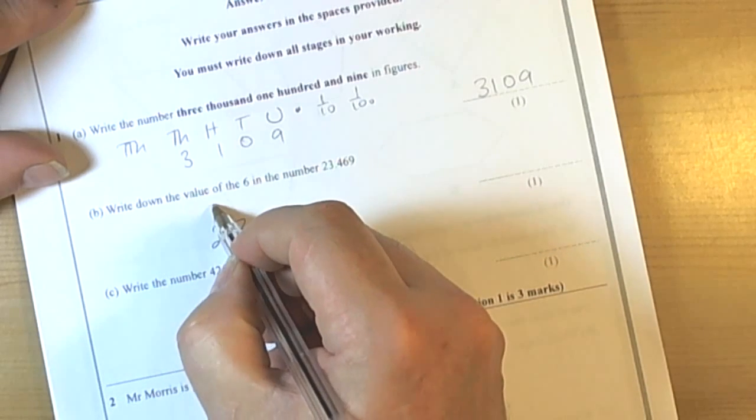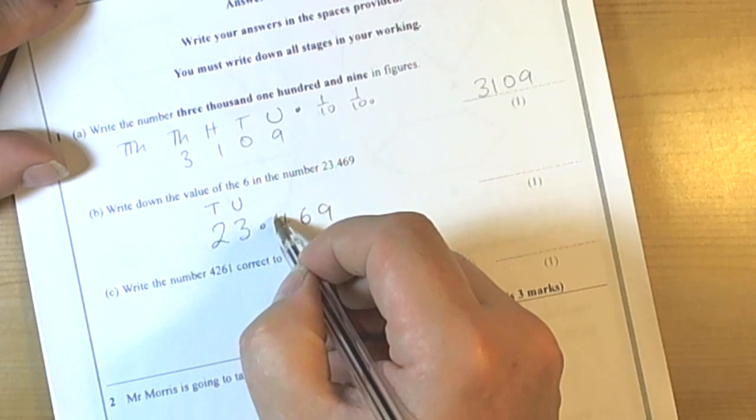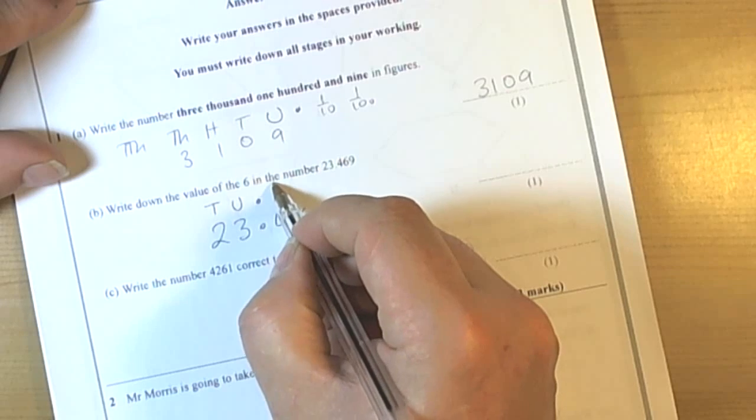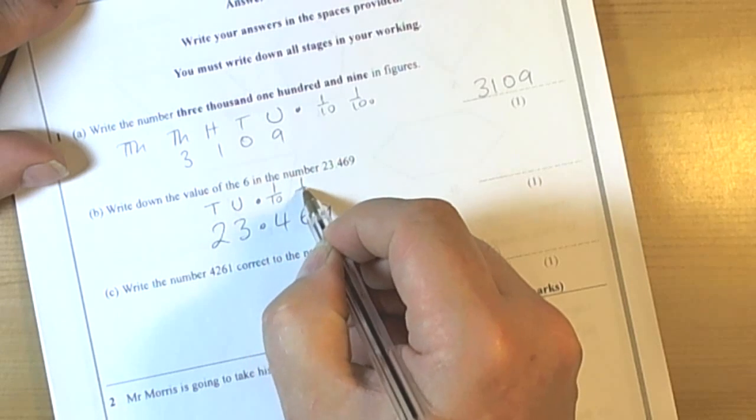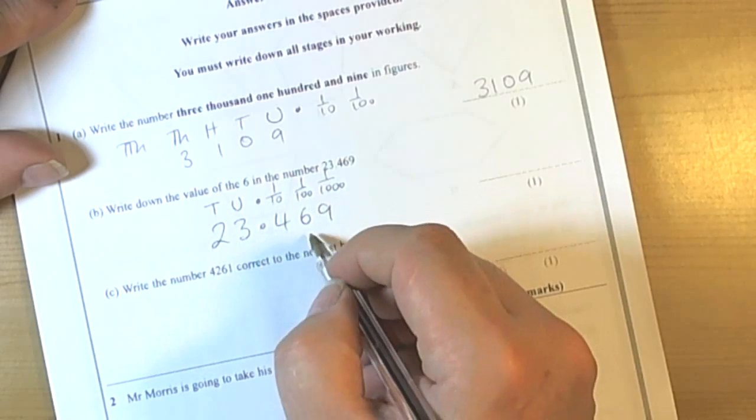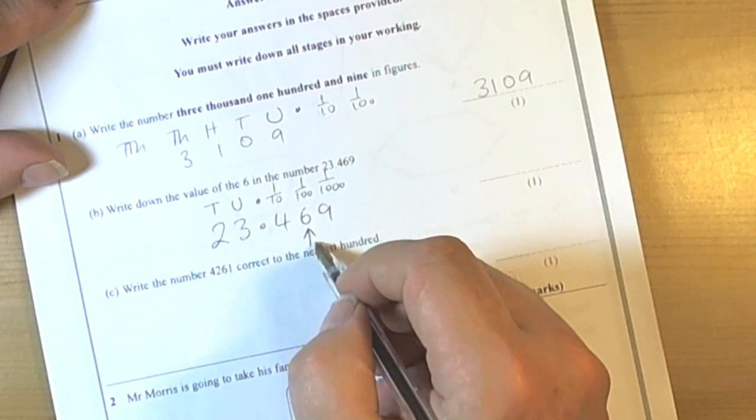Well again, if we think about the way place value works, this is in the tens column, then the units. So after the decimal points we're going into the decimal fractions. So tenths, hundredths, thousandths. So they're asking for the 6 and that's in the hundredths column.